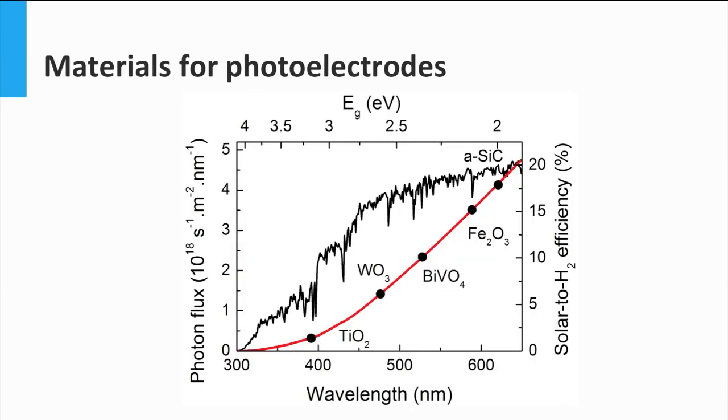There are several materials that can be considered for solar water splitting. Some of the most popular materials studied for this application are titanium dioxide, tungsten oxide, bismuth vanadate, iron oxide or silicon carbide. These last three materials are the ones with a more promising future, judging by their potential solar to hydrogen efficiency, as shown in the graph.